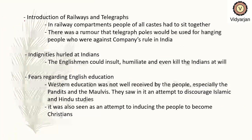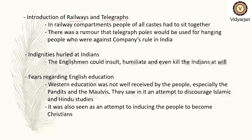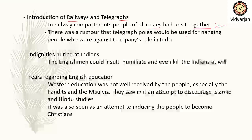Another social religious cause was the introduction of railways and telegraphs. In railway compartments, people of all castes had to sit together, which was a concern given the concept of lower and upper castes. Additionally, telegraph lines and railways could be used for controlling people who were against the Company's rule in India. These things annoyed and unsettled the people.